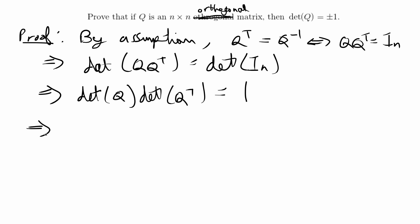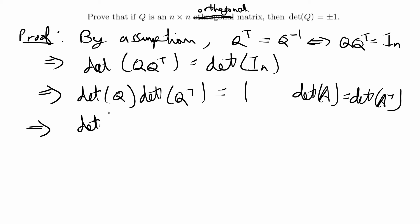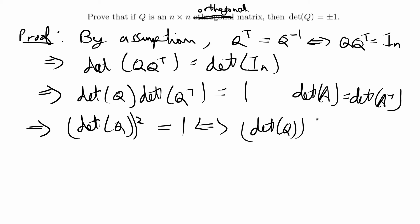There's another theorem that says the determinant of A equals the determinant of A transpose. So the determinant of Q transpose equals the determinant of Q, which means we actually have the determinant of Q squared is equal to 1.